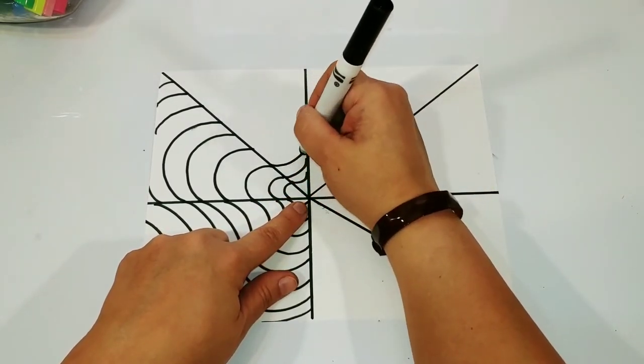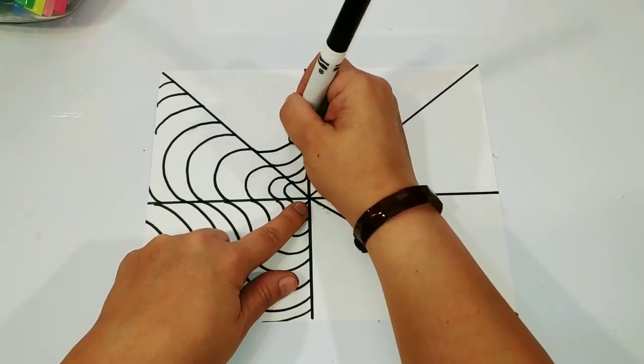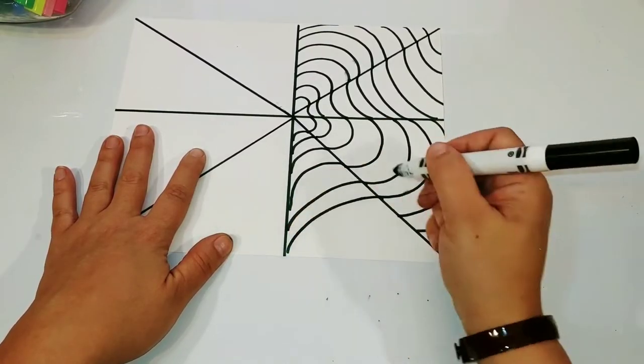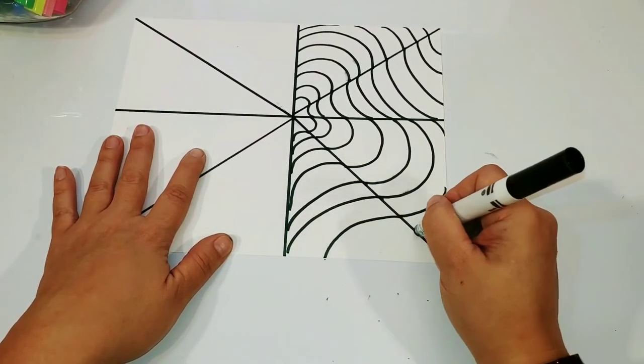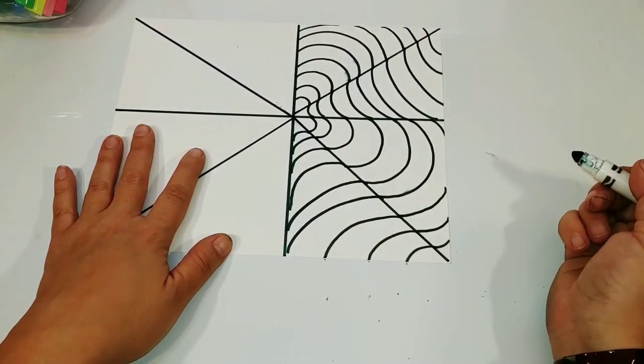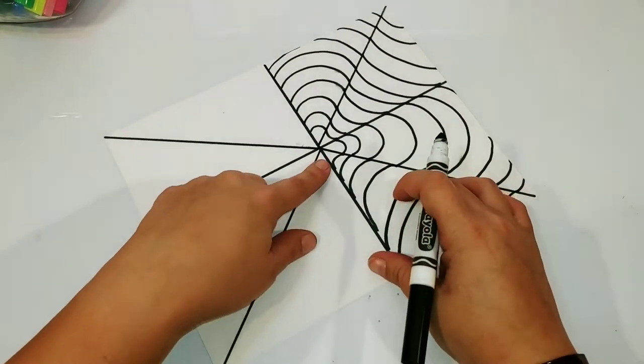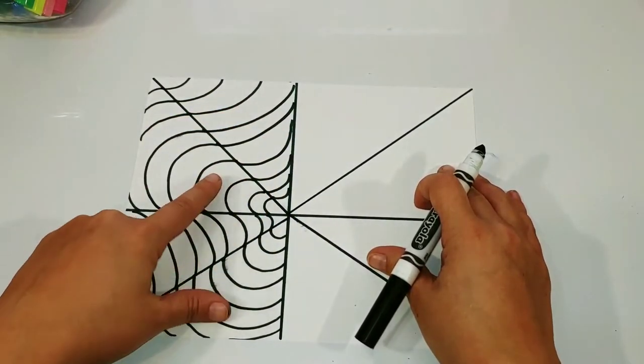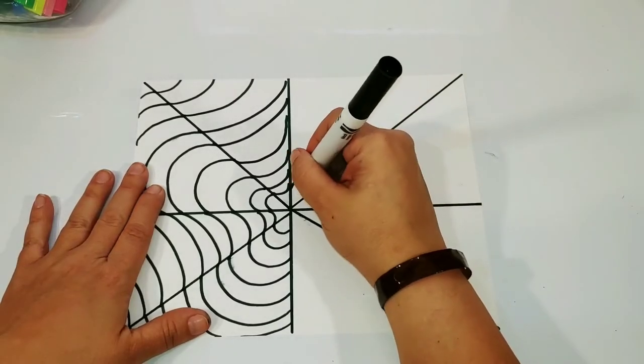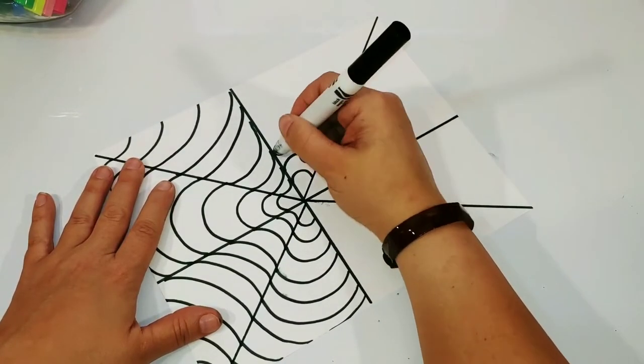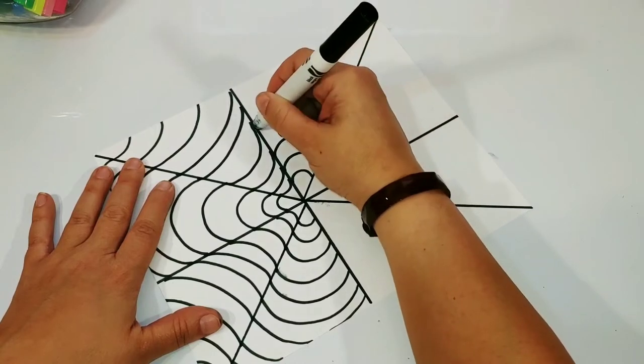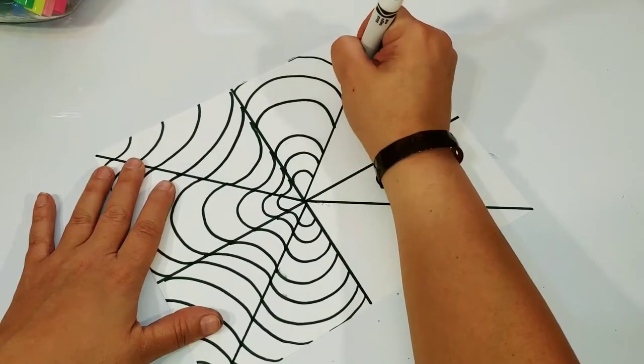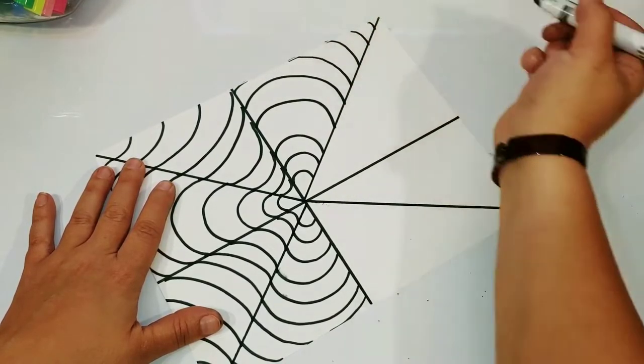Now we're going to go back to that reverse rainbow, and again if it's easier for you to draw that arc flipping the paper upside down, do that. I know it was easier for me. All the way to the edge. You want to make sure that we don't skip any sections, this way all of our lines will connect and match.